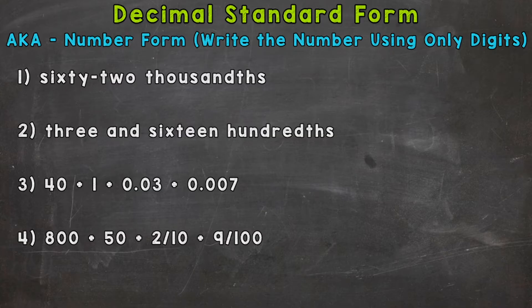We're writing the number using only digits. And in the case of this video, numbers one and two, we're starting with word form and converting to standard form. Numbers three and four, we're starting with expanded form and converting to standard form. So let's jump into number one.